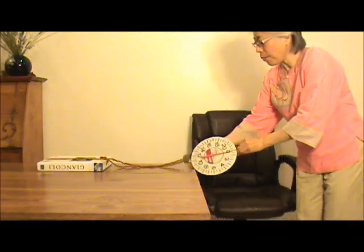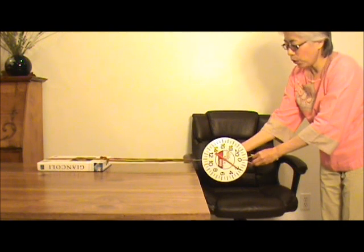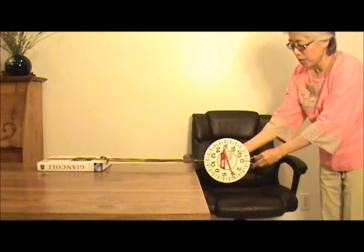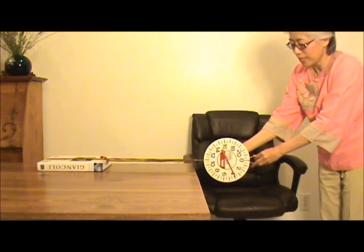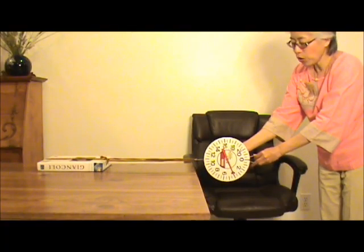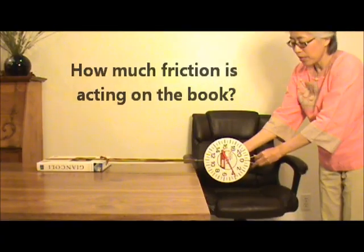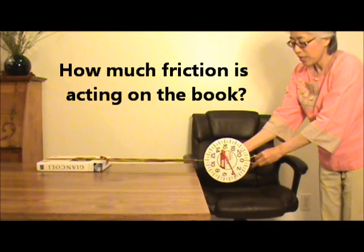Now, I am going to increase the pulling force from two newtons to four newtons. The book still does not move. How much do you think friction is now? Four newtons, so they can cancel my pull exactly.